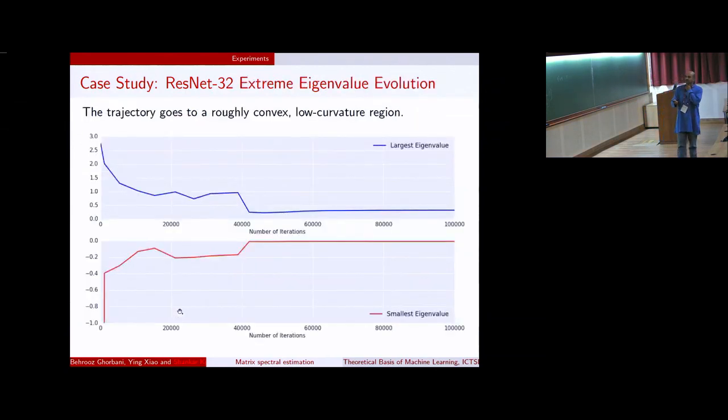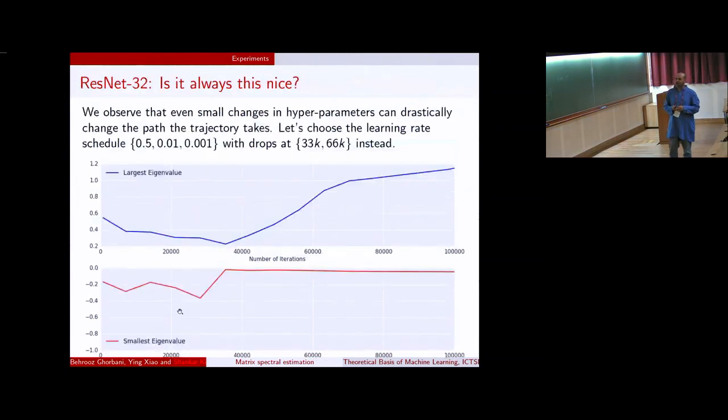This is like the maximum eigenvalues and minimum eigenvalue as you perform various iterations. So now the question is, is it always this nice? What happens if you change things a little bit? People have a lot of hyperparameters in deep networks, the learning rate, certain places of when to drop the learning rate, and so on. People have developed some intuition, but it's purely a manual task. So we decided to change the initial learning rate from 0.1 to 0.5, and leave the rest same. We changed this a little bit, and now the largest eigenvalue starts going way up.